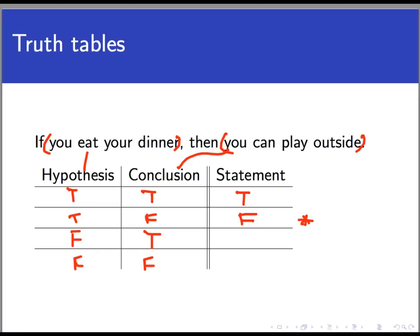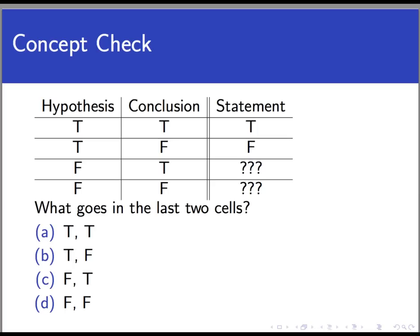Now here's a concept check. What goes in the last two cells of this table? Is it true then true, true then false, false then true, or false then false?